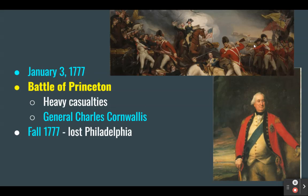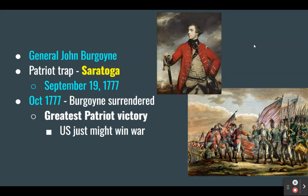For the rest of 1777, Washington suffered more defeats. By fall, the Patriots lost their capital Philadelphia to Howe's army. Another British Army marched from Canada to invade New York's Hudson Valley, led by General John Burgoyne. Burgoyne fell into a Patriot trap at Saratoga on September 19, 1777. By October 1777, Burgoyne surrendered. This was the greatest Patriot victory yet, and Saratoga was that hint that just maybe the United States might win this war.